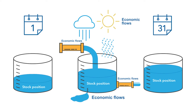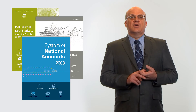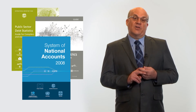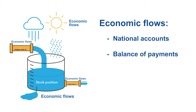In all macroeconomic statistics, we record both stock positions and economic flows. We record stock positions in a balance sheet, but we can also record stock positions in other more specialised accounts — for example, government debt statistics, external debt statistics, and in the national accounts, we record certain stocks in an input-output context. Economic flows appear in all accounts and tables of macroeconomic statistics. This includes the national accounts measuring production and consumption, the balance of payments measuring imports and exports of goods and services, and in government finance statistics, we measure government revenue, expenditure, and its financing.